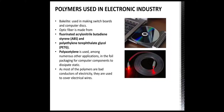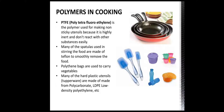Polymers are also used in cooking. PTFE, that is polytetrafluoroethylene, is a polymer used in making non-stick coatings for utensils because it is highly inert and does not easily react with other substances. Many spatulas used for stirring food are made of Teflon to smoothly remove food from the pan. Polythene bags are used to carry vegetables, and many hard plastic utensils, for example Tupperware, are made of polycarbonate and LDPE, that is low-density polyethylene.